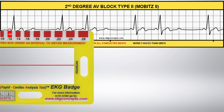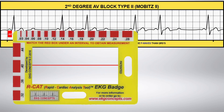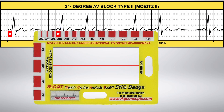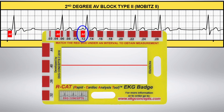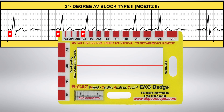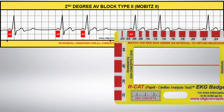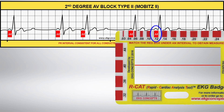Using the calibrated red boxes on the EKG badge, you will see that the P-R intervals are consistently 0.12 for all conducted beats. This is at the lower boundary of the normal range of 0.12 to 0.20.